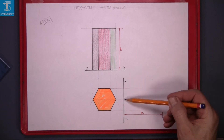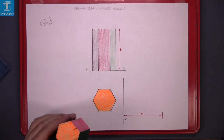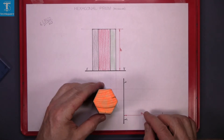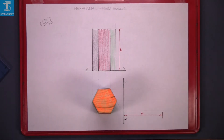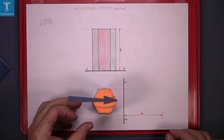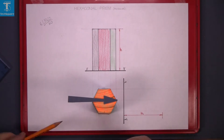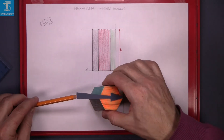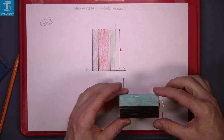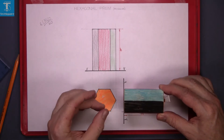Now we're given this XY line here and we're asked to project out from the plan, again at 90 degrees to the XY line. We're looking across in the direction of the arrow, and the view we see when we look across is that there — we just see two surfaces in this case.